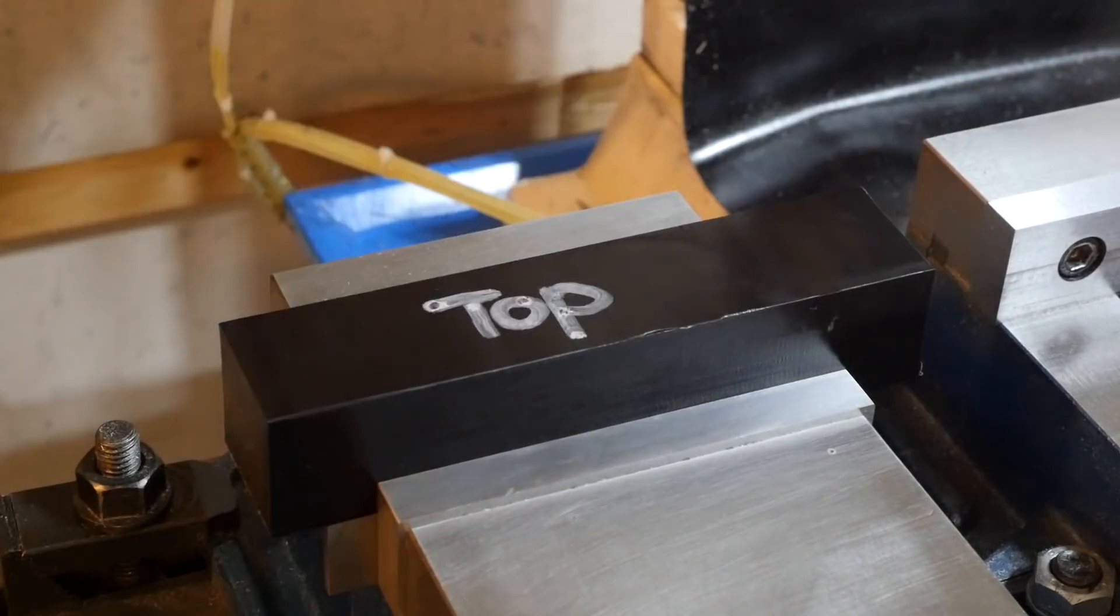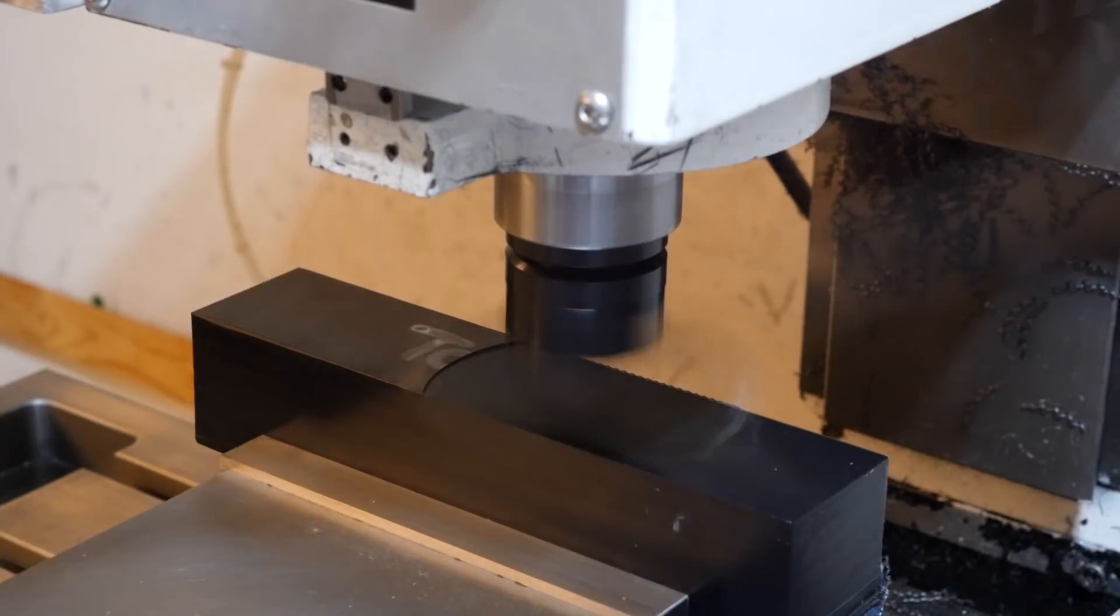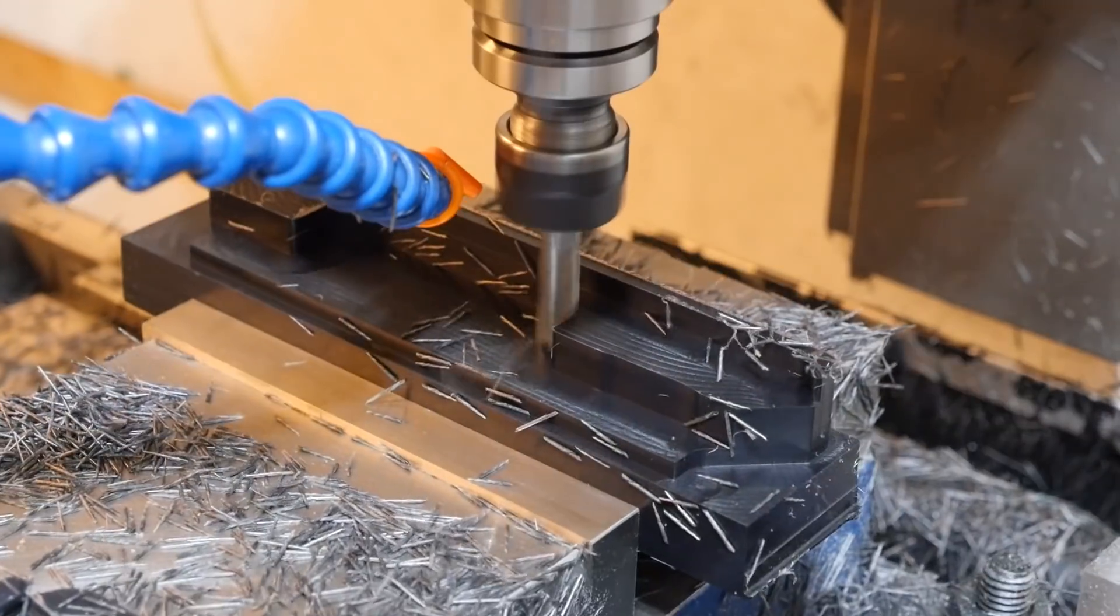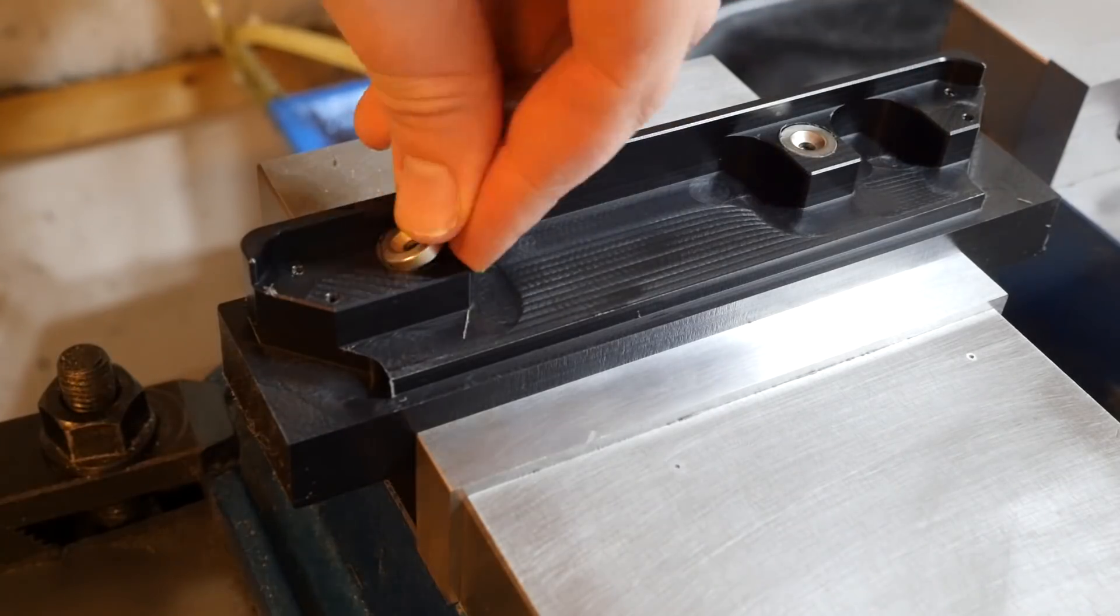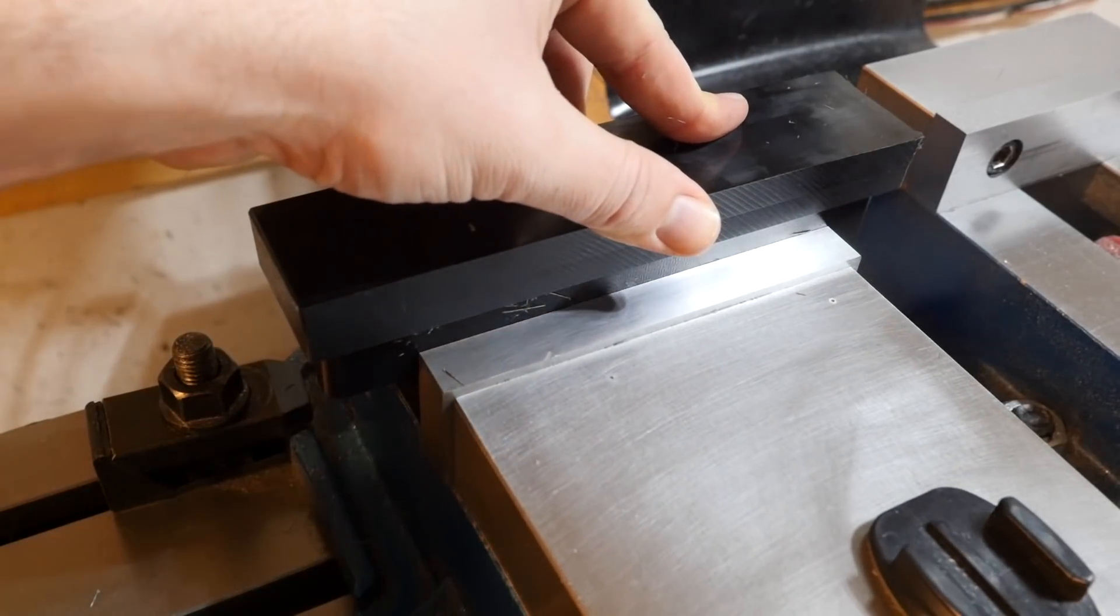For the right part of the frame, the process is the same. We load up the stock, probe it into position, zip off the top of the stock, and then machine as many features as we can from the first side. We test the magnet fits, flip it around in the vise, and then we remove the material from the other side.